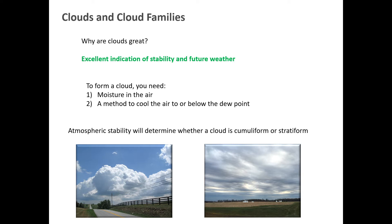You have to have moisture in the air, because that's the visible portion of the cloud, and you have to have a method to cool the air to or below the dew point. In order for the moisture to be physically present so you can see it and touch it, you have to bring that pocket of air to the dew point - to its 100% moisture content point, where the air can no longer handle more moisture. It will condense and become visible.